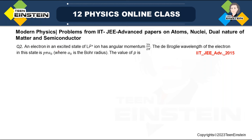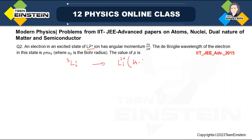An electron in an excited state of lithium — we know lithium has three electrons. When we excite it to the 2+ state, it acts as a hydrogen-like atom. So this becomes a hydrogen-like atom, which means we can use Bohr's theory upon it. We can use Bohr's postulates for calculating energy and other quantities — but only for hydrogen-like atoms.